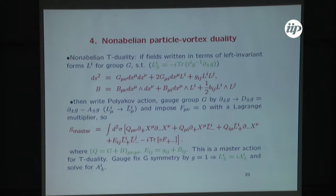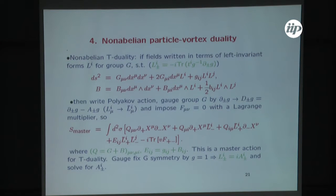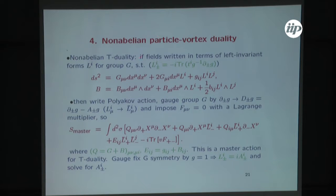We have also found that there is a non-abelian version of particle-vortex duality. Our hope was to have a transformation on the full non-abelian ABJM action, which is why we started looking for this non-abelian particle-vortex duality. There was no such version in the literature — people thought particle-vortex duality was a purely abelian concept. We were able to find this, but with a caveat: the non-abelian nature comes from some global symmetry. The way we did that was a simple generalization to 2+1 dimensions of the so-called non-abelian T-duality in 1+1 dimensions.